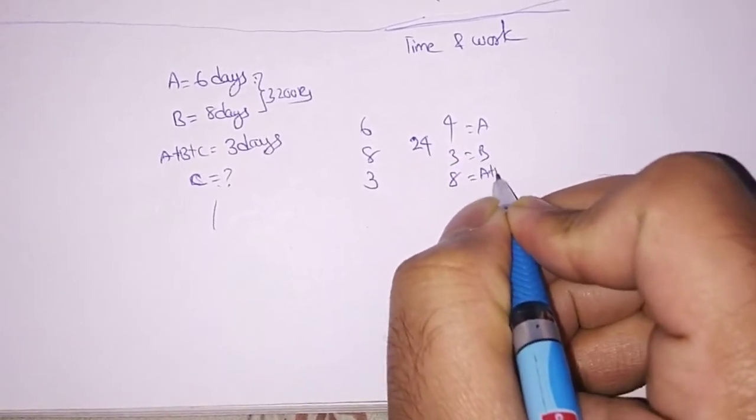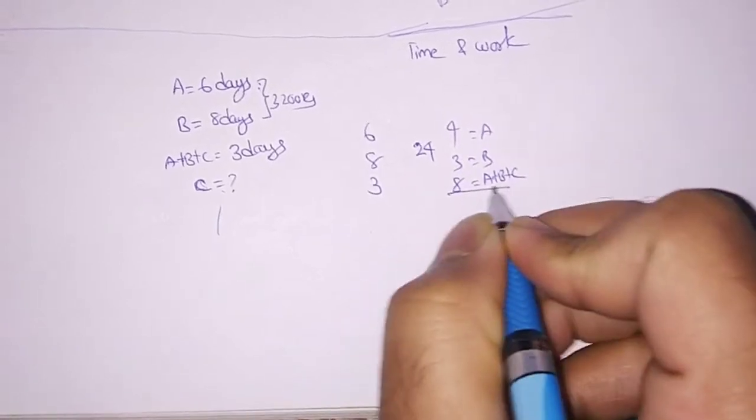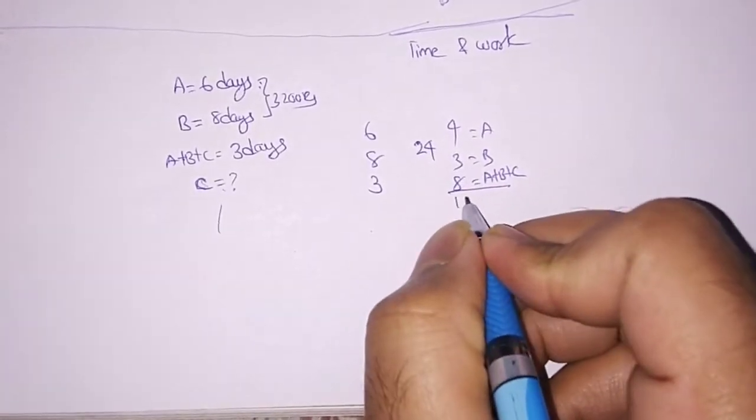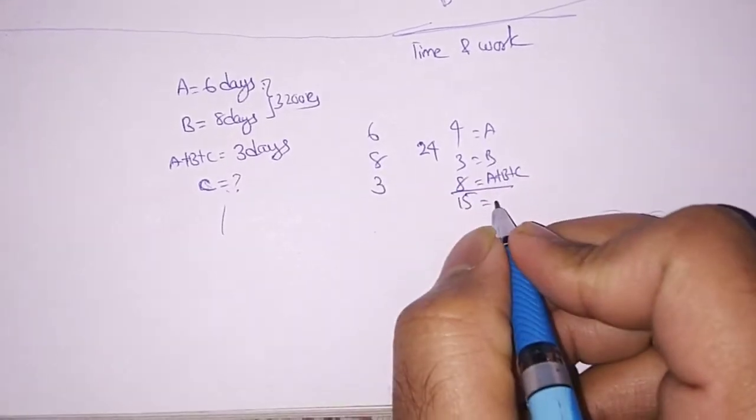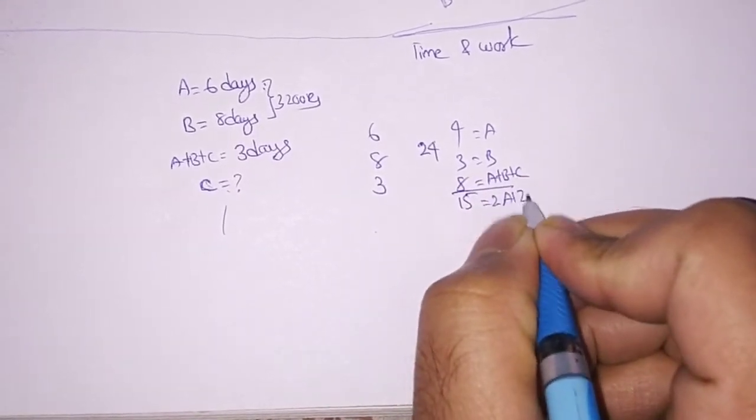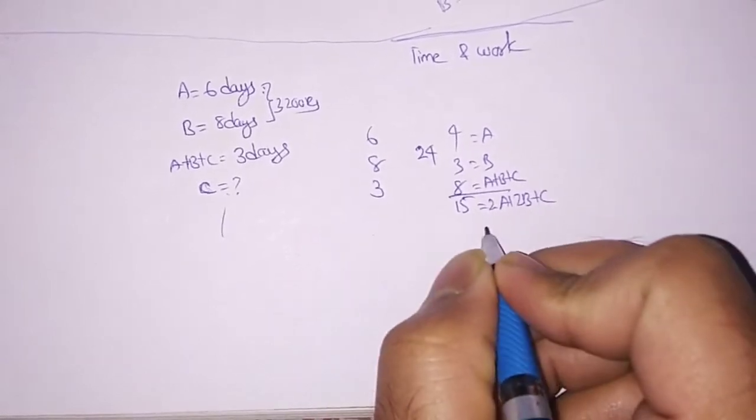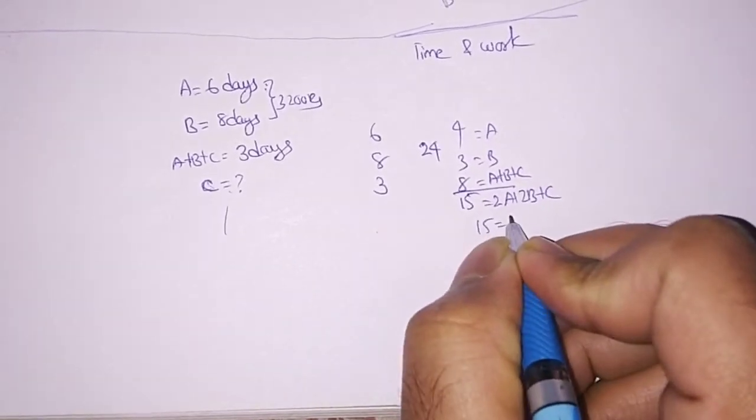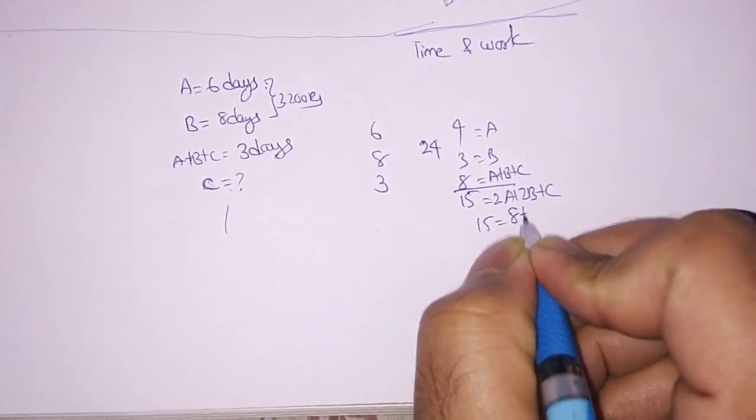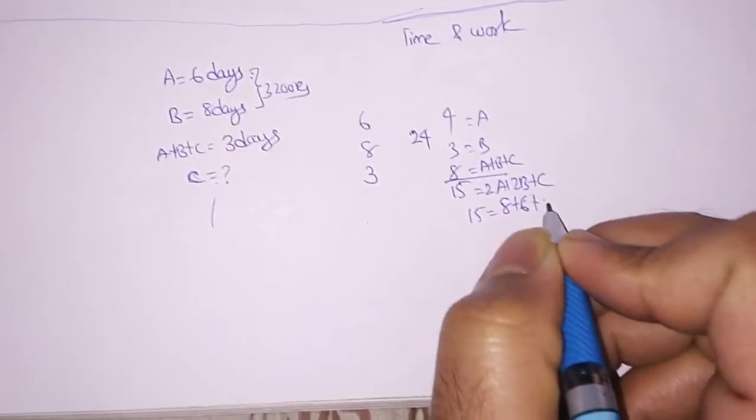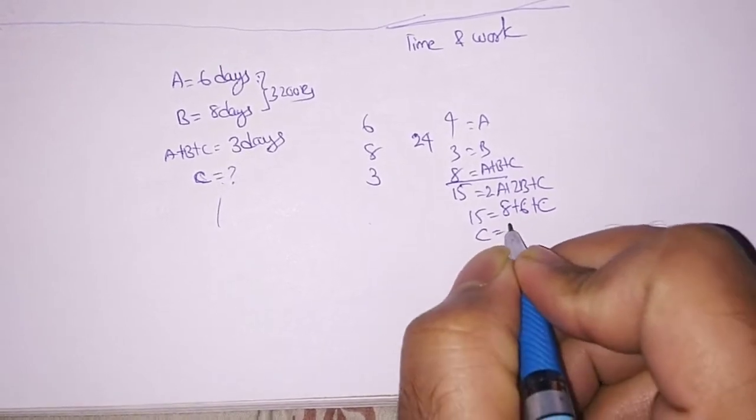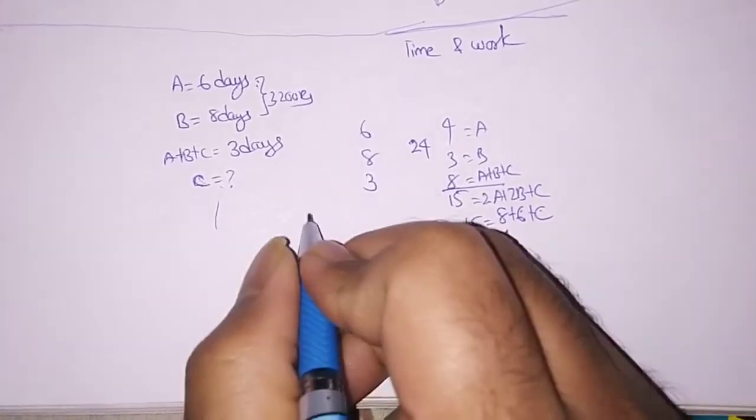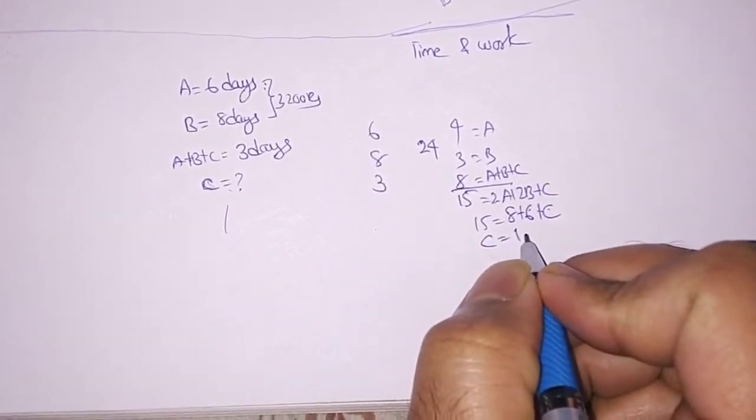This is A plus B plus C and it will become 8 plus 4, 12, 12 plus 3, 15 and A plus B plus C, 2A plus 2B plus C, 15 equal to 2, 4 is 8, 2, 3 is 6 and C, so 15 minus 14 will become 1. So we know that C is 1.